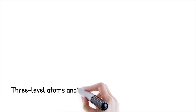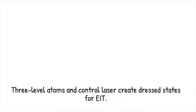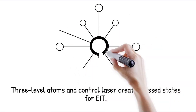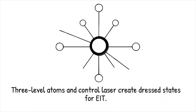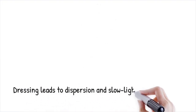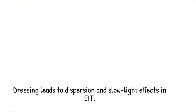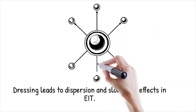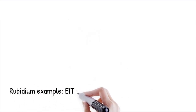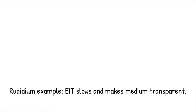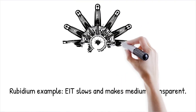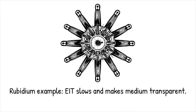Three-level atoms provide the simplest platform for EIT by coupling two ground states to a common excited state under two laser fields. The control laser dresses the atom, splitting the excited level into two dressed states and opening a transparency window at the probe frequency. This splitting also creates steep dispersion within the window, dramatically reducing the group velocity of light. Thus, the three-level configuration not only enables transparency but also slow light effects. In cold rubidium ensembles, EIT slows light to a few meters per second while rendering the medium transparent.